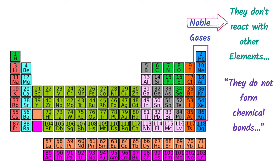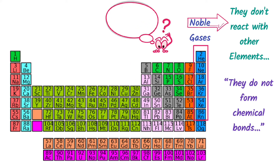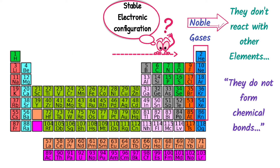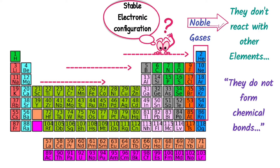Why don't noble gases form chemical bonds? Because they have a stable electronic configuration. And since noble gases already have a stable electronic configuration, other elements form chemical bonds in order to match that configuration of noble gases.